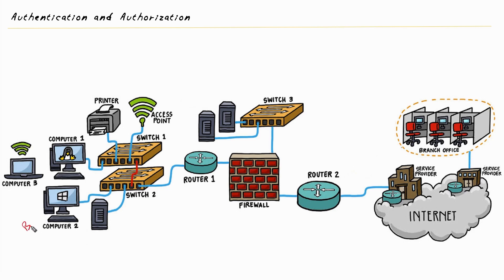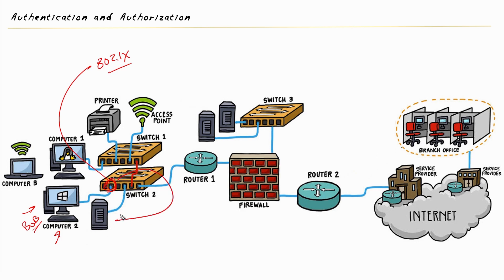Here's an example. Imagine we have Bob at his computer, which is connected to a port on the switch. We're doing 802.1x in this environment, which means we want Bob to prove who he is before giving him full network access. Bob's computer runs an agent providing his credentials. The switch uses the back-end services of a centralized authentication server, which switch one, switch two, the access point, and other devices can all use for verifying Bob's credentials.